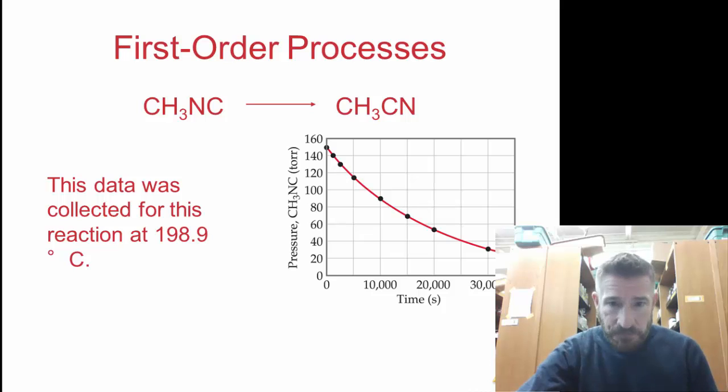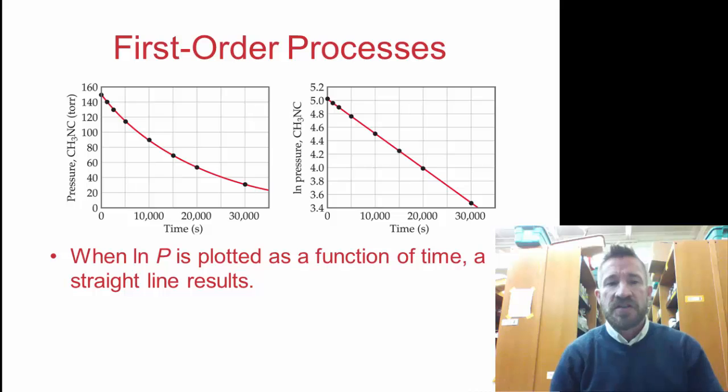If you graph this, if you just graph it simply with pressure versus time - remember we can use pressure and concentration, we learned that in the last chapter on gases - you'll get a slope like this. We can get the rates from this, but if we change this and take natural log of this, all of a sudden we'll see a straight line. When P is plotted as a function of time, a straight line results. That is only for a first order process.